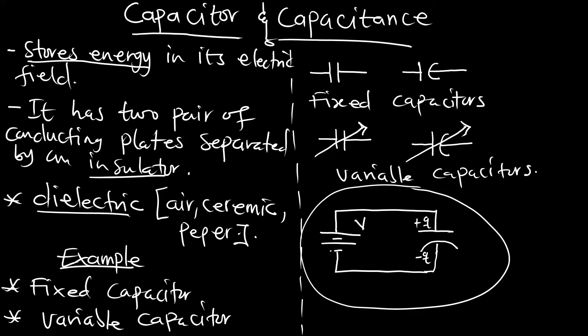The two conducting plates — negative and positive — allow charge to move from one place to another. They are also separated by a dielectric, which can be air, ceramic, or paper. The ability of the capacitor to store charges is what we call capacitance.